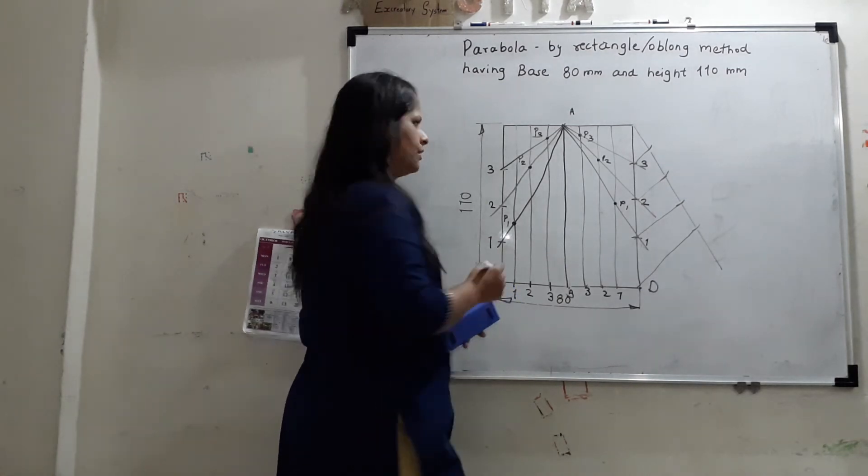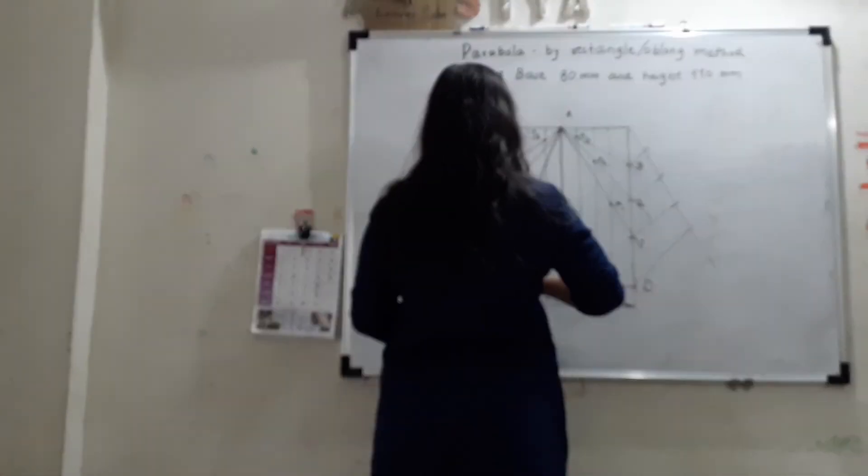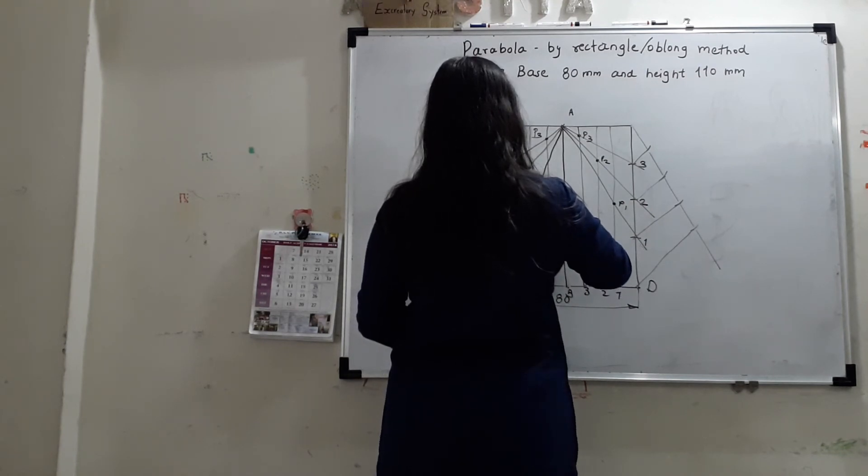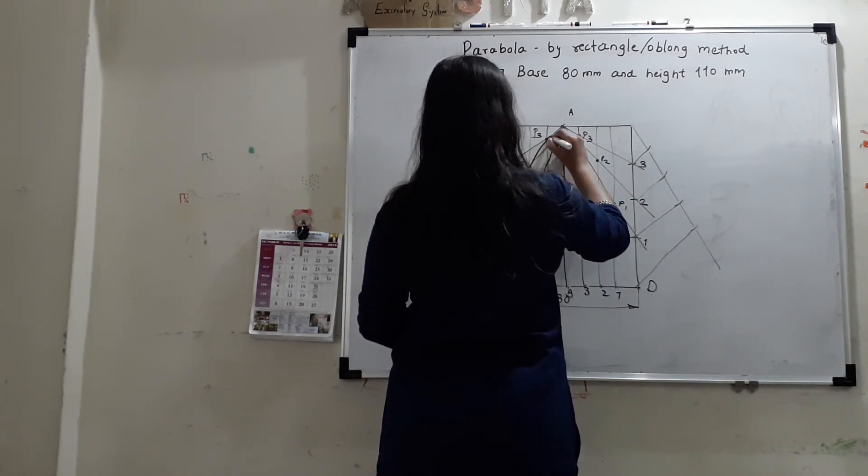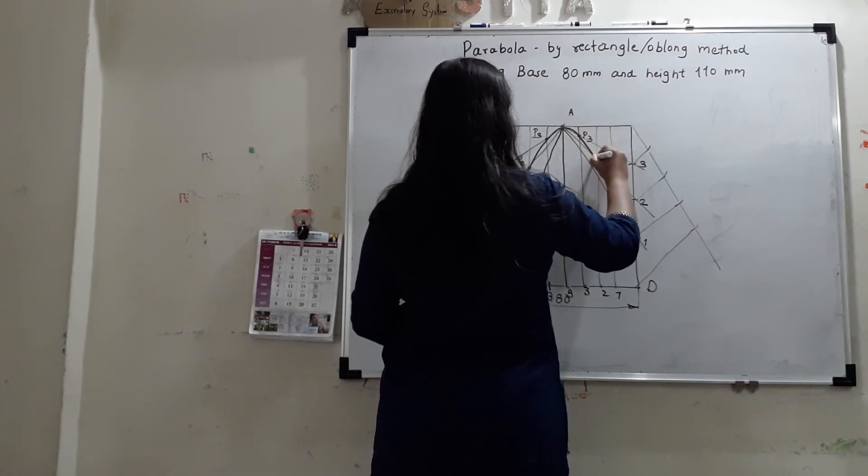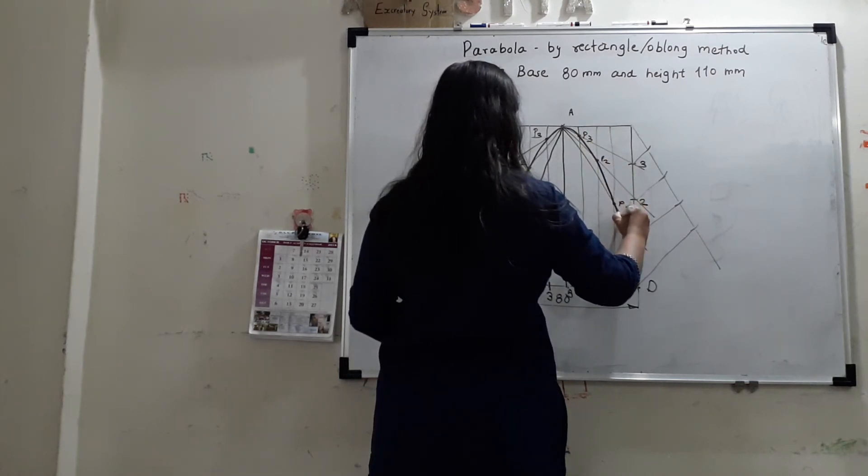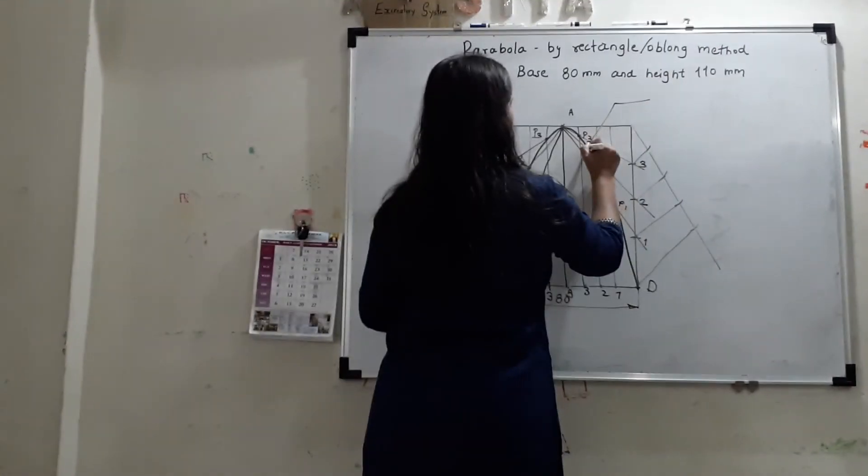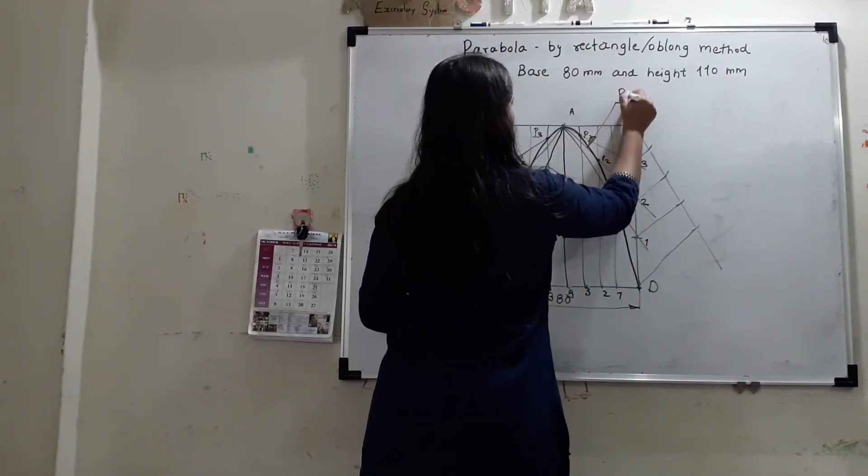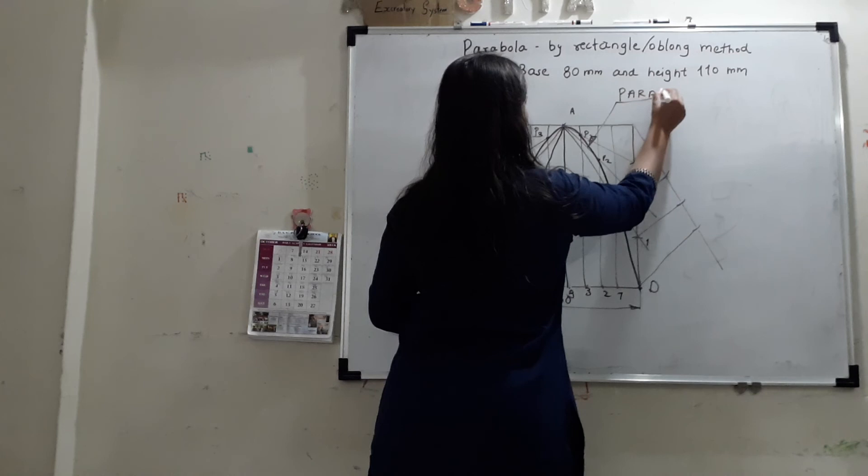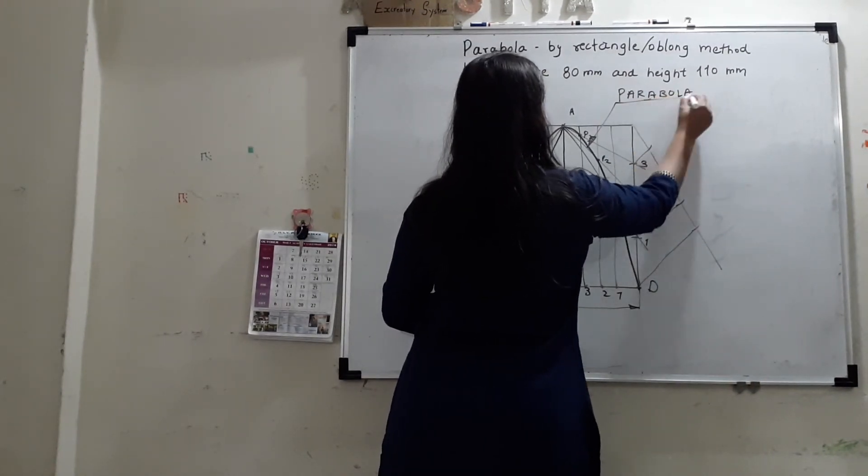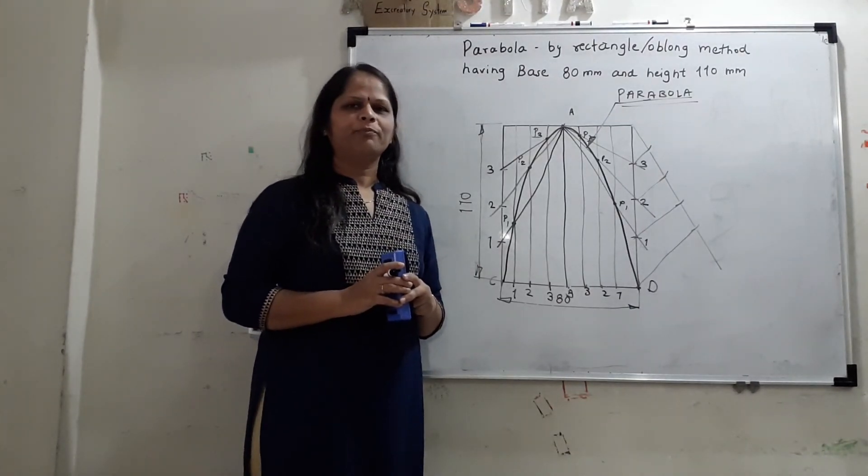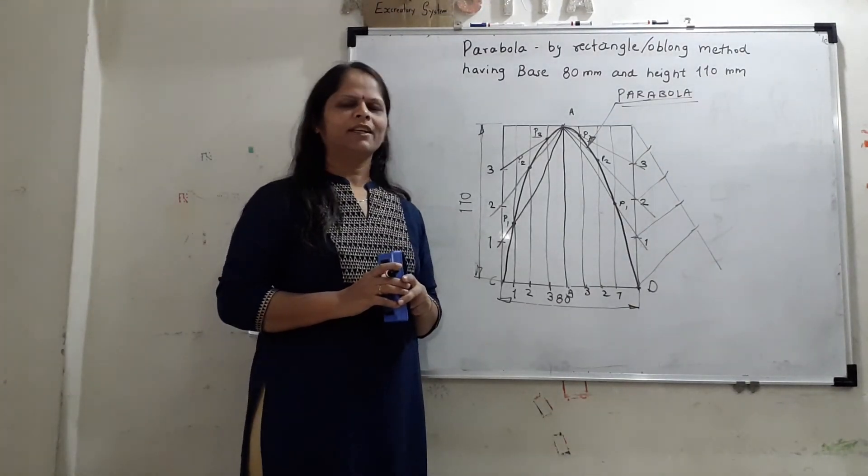You can use French curve to join them. Join it using a thick line. This curve is known as parabola. This is the way to draw a curve parabola using rectangle method. Thank you.